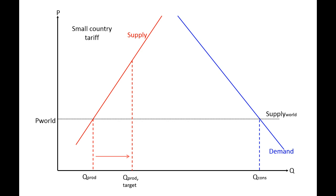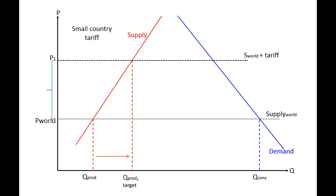We can either increase the market price or decrease the production cost. With the tariff, we're going to increase the market price. We introduce a tariff that raises the market price from the world price P-world up to the new domestic price P-tariff. The difference between P-world and P-tariff is the tariff, so all imported goods will cost that much more to import. As a result, consumption will decrease because consumers now have to pay a higher price for this good.